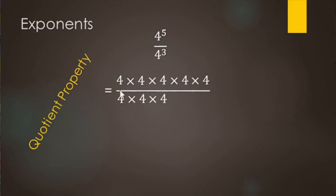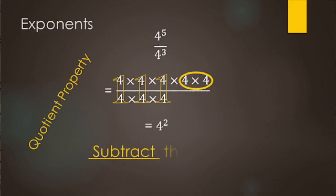What is four over four, or four divided by four? That makes one. We have another four over four making another one, and another one, leaving us with one times one times one times two more fours being multiplied. Anytime you multiply one times a number, you just get that number back, so we are left with two fours being multiplied. When you are dividing powers with the same base, you subtract the exponents.